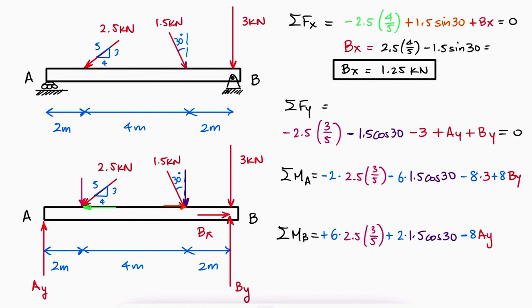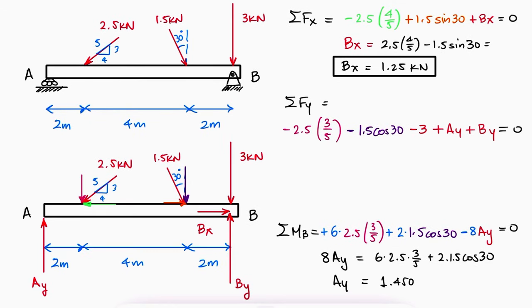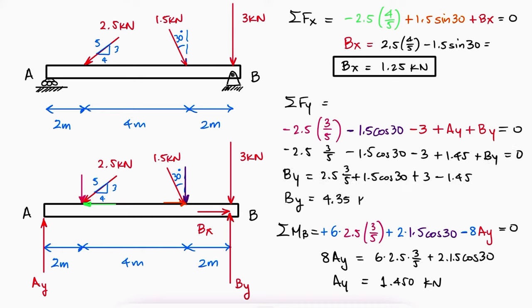But since the sum of moments about B has one fewer term because the line of action of the 3kN force passes through B, we'll use that sum of moments to solve for AY and substitute its value in the sum of forces in Y to solve for BY.